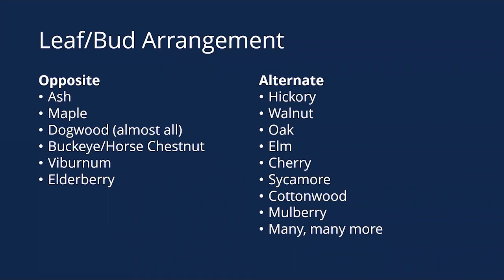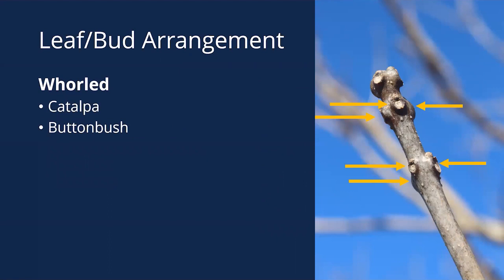There is another category which is whorled arrangement — three or more buds, leaf scars, or leaves coming out from the same point at the same time. In Illinois, the full-size tree with this is catalpa; button bush is a native shrub but never reaches tree size. If you find one that has three buds or three leaf scars consistently coming out from the same point, you're probably looking at catalpa. Sometimes catalpa has only opposite branches, so not every intersection has three buds, but by and large most do — look at multiple points.